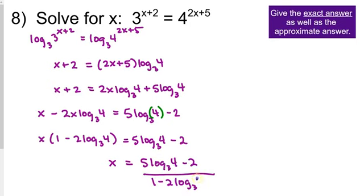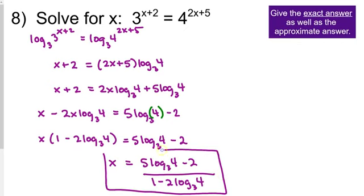It will look different if you chose to use log base 4 instead. Type that into the calculator to get the approximate answer — I got x is approximately negative 2.828.